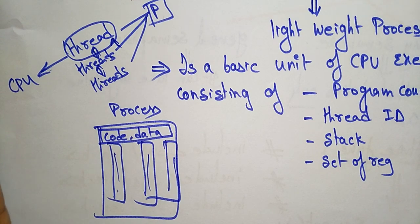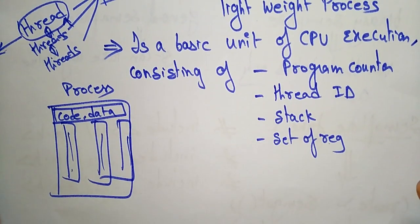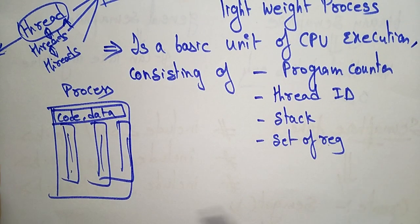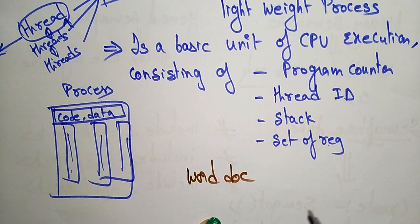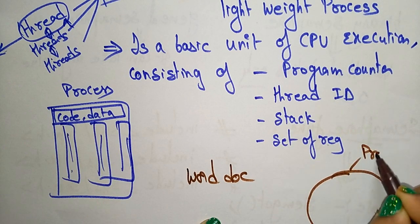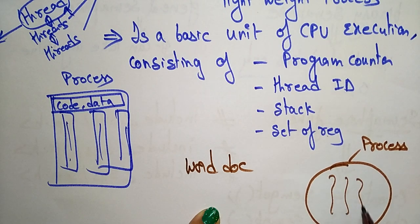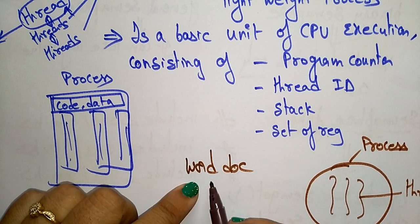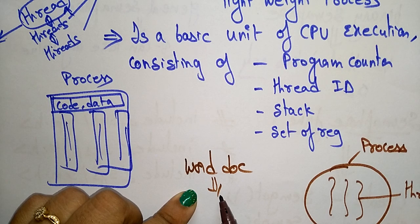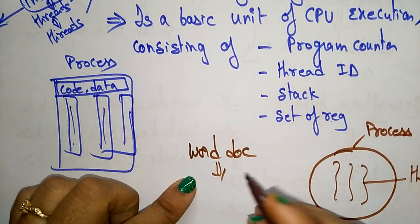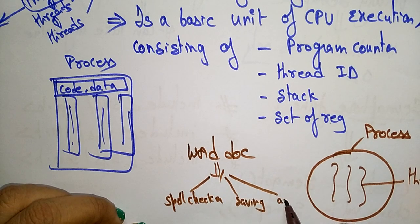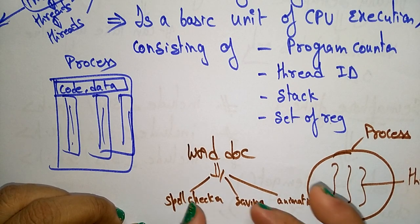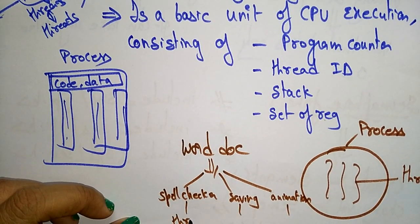Let me give a general example to understand the process and thread. Take Microsoft Word as an example — Word is a process. Within this process, you have threads. In the Word document, the spell checker can be considered a thread. The Word document has many features like spell checking, saving files, and creating animations. These different tasks in the Word document are each called a thread, which is a lightweight process.